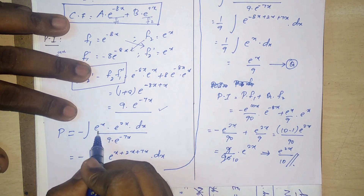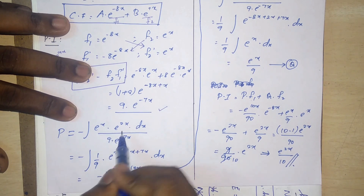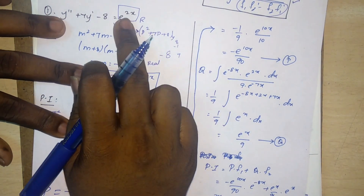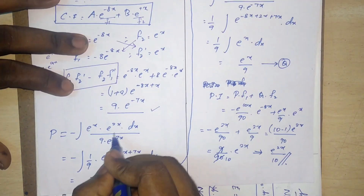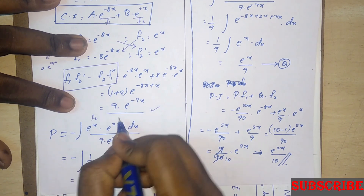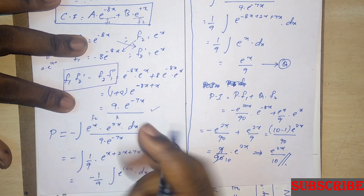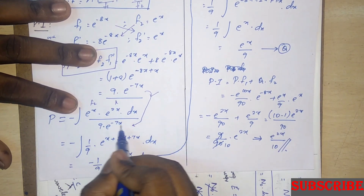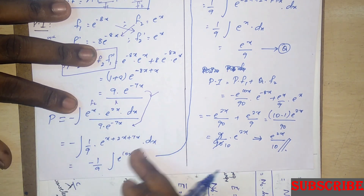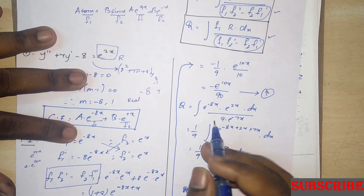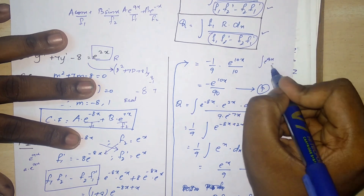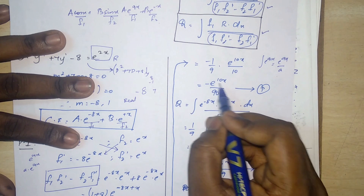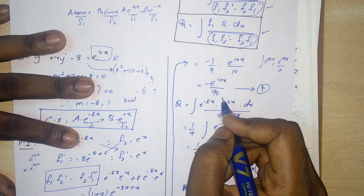To find p: the integral of minus f2·r divided by the Wronskian. Here f2 = e^x and r = e^(2x). So we integrate minus e^x · e^(2x) / (9·e^(-7x)). The powers add: x + 2x + 7x = 10x, giving integral of e^(10x)/9. Integrating: e^(10x)/90. So p = e^(10x)/90.